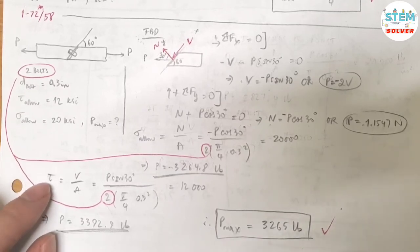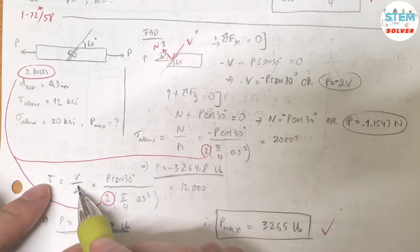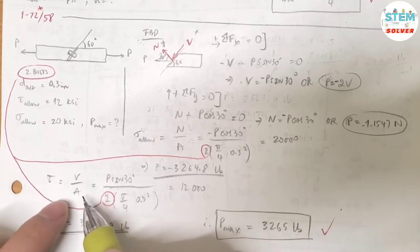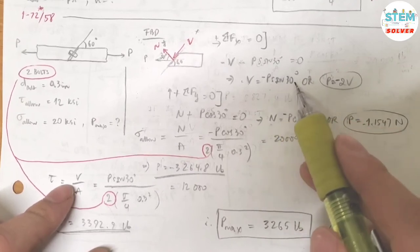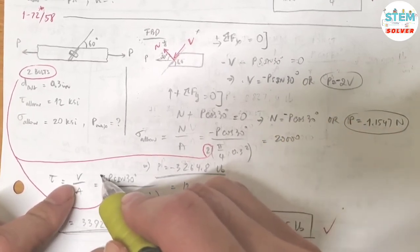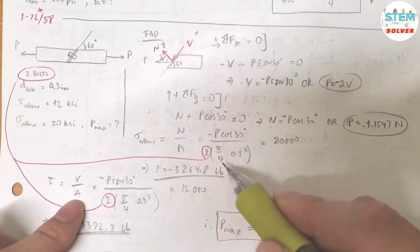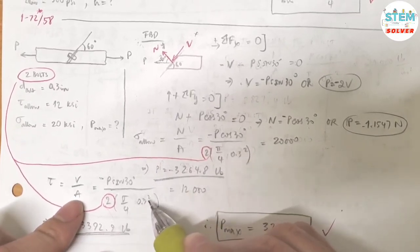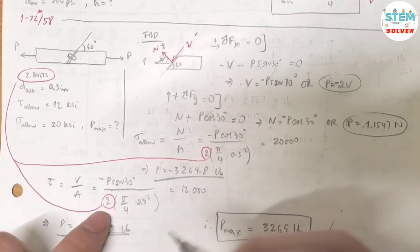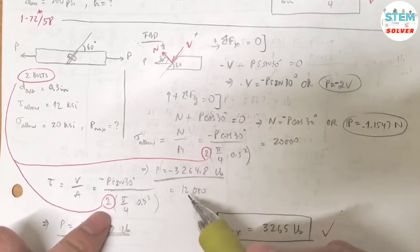So you are given the shear stress equal to V, the shear force, divided by the area. What is the shear force? The shear force is negative P sine 30. And what is the area? Area is the same as the area for the normal stress. So again, pi over 4 times 0.3 squared, and don't forget to multiply by 2 because you have 2 bolts. Set that equal to 12,000.